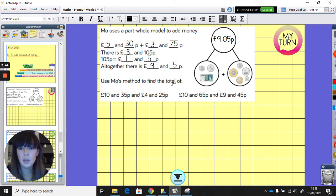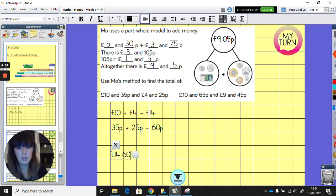Now for this one, we're going to use Mo's method to find the total of £10 and 35p, £4 and 25p. So that's our first one. So we're going to add the pounds up first. So we're going to add £10, add £4, equals £14, that's not too hard, is it? And then we're going to add 35p, add 25p. And what does 35p add 25p? So I'd add the 30 and then I'd add the 10s and then I'd add the 1s. So we've got 50 and then we've got 5 and 5 is 10, so that will equal 60p. So then all together, we've got £14 and 60p.